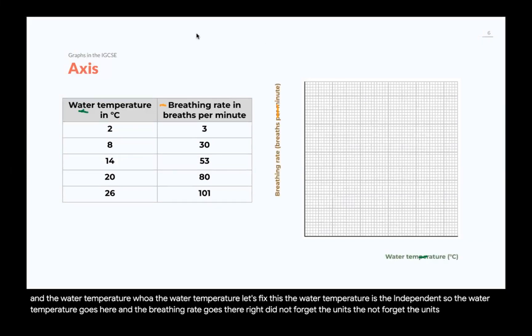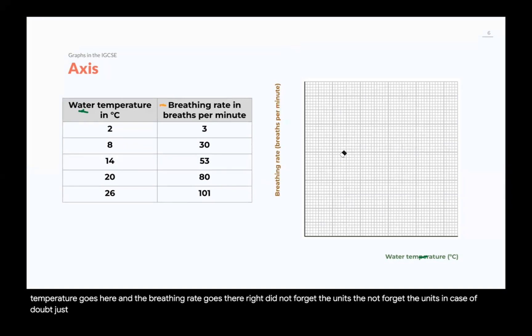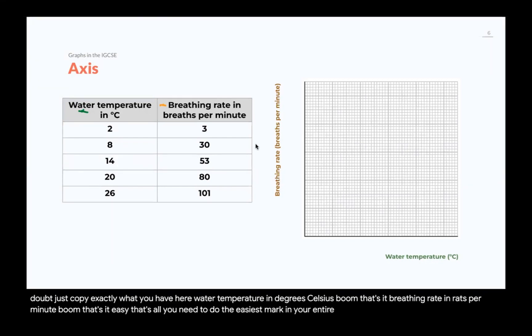Do not forget the units. Do not forget the units. In case of doubt, just copy exactly what you have here. Water temperature in degrees Celsius. Boom. That's it. Breathing rate in breaths per minute. Boom. That's it. Easy. That's all you need to do. The easiest mark in your entire paper.